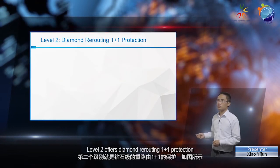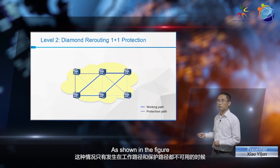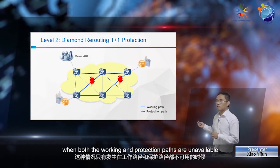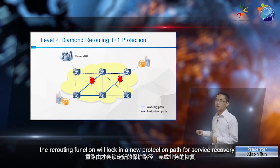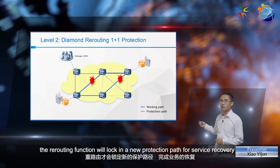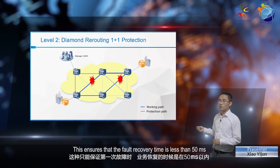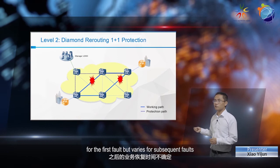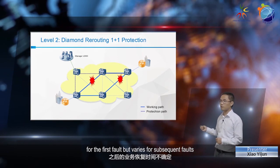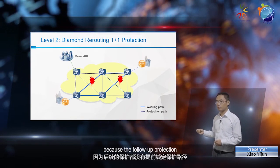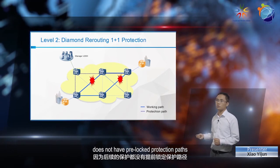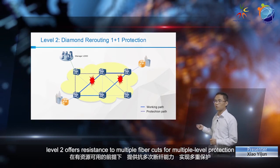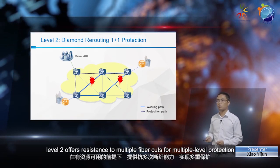Level 2 offers diamond rerouting 1+1 protection. As shown in the figure, when both the working and protection paths are unavailable, the rerouting function will lock in a new protection path for service recovery. This ensures that the fault recovery time is less than 50 milliseconds for the first fault, but varies for subsequent faults, because the follow-up protection does not have pre-locked protection paths. When resources are available, Level 2 offers resistance to multiple fiber cuts for multiple level protection.